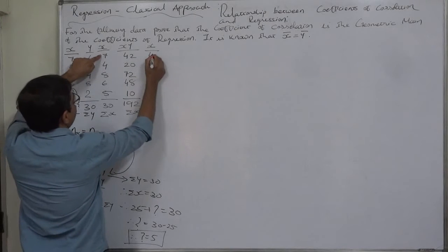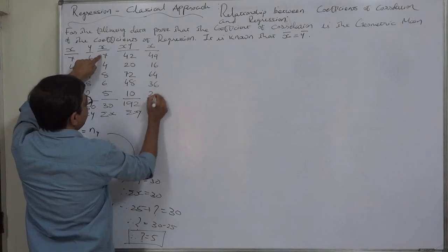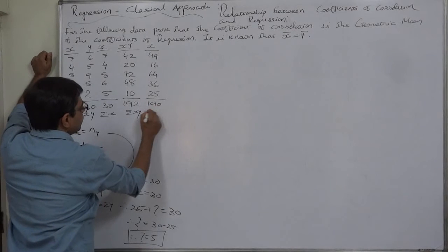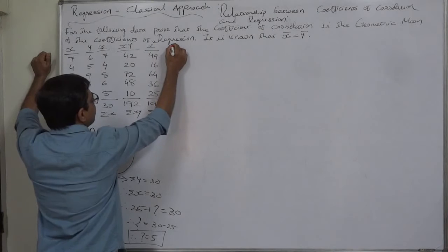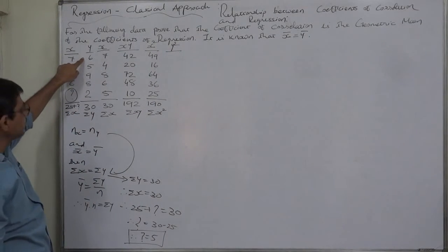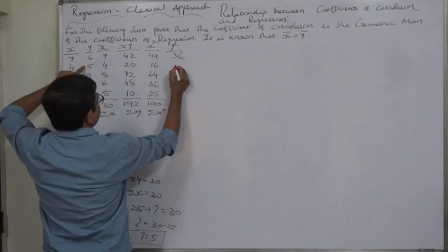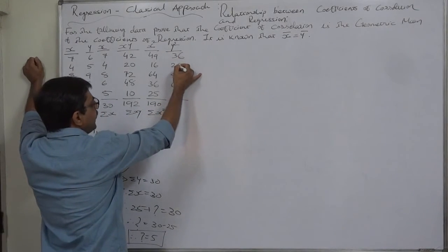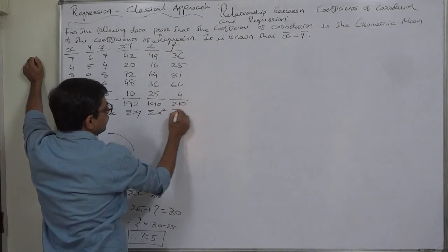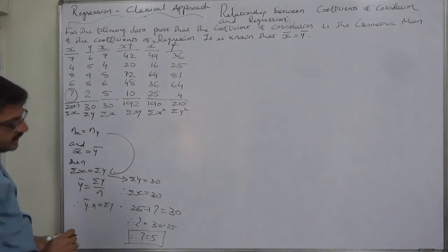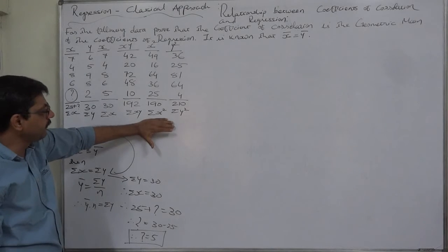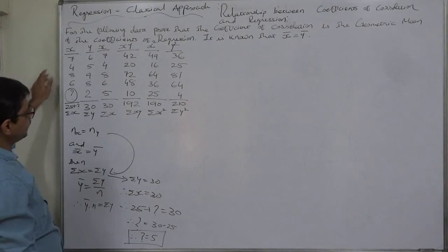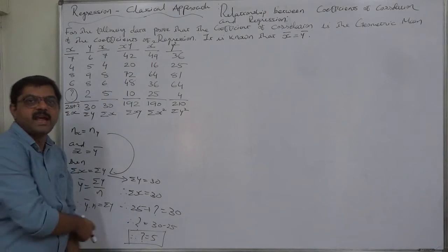The x² column: 49, 16, 64, 36, 25 — total σx² = 190. The y² column: 6²=36, 5²=25, 9²=81, 8²=64, 2²=4 — total σy² = 210. We have no independent check on these summations, so be careful with multiplication, squaring, and finding the totals.